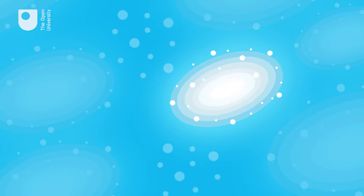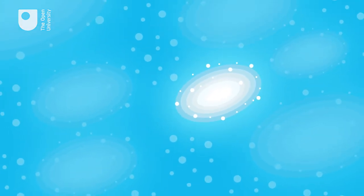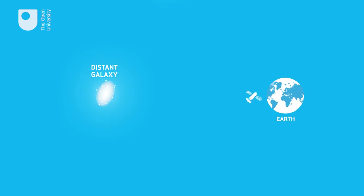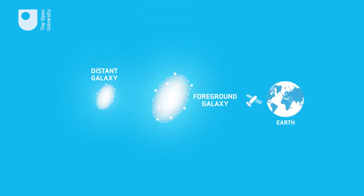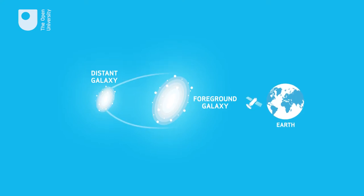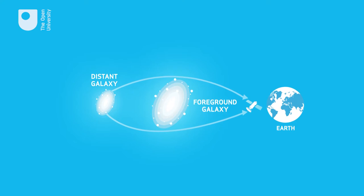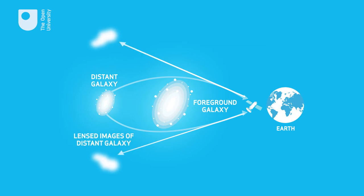Here are lots of distant galaxies, but one of them looks much brighter. Why is it brighter? It's because of the effect of another, closer galaxy. Here is a faraway galaxy, here's us, and let's put a galaxy in the foreground. This foreground galaxy, like all matter in the universe, is warping the space around it so it distorts our view of the background galaxy, making it seem bigger and brighter. We call the effect of the foreground galaxy a gravitational lens.